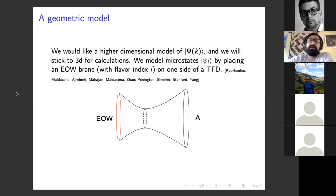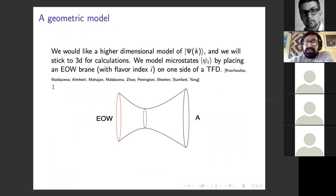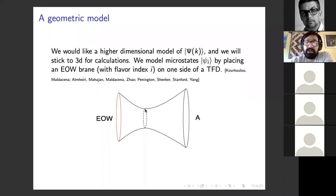Here comes the geometric model. We want a higher dimensional model of psi_k, sticking to three dimensions for calculations. We're going to follow these authors and model these black hole microstates by placing an end-of-world brane with some flavor index i on one side of a thermofield double — also called the two-sided eternal black hole. We have some asymptotic region A, another asymptotic region on the left-hand side of the wormhole. This is a spatial slice of the thermofield double. Instead of continuing all the way to the other asymptotic boundary, we cut off the geometry with a brane. This brane will have some action and dynamics.